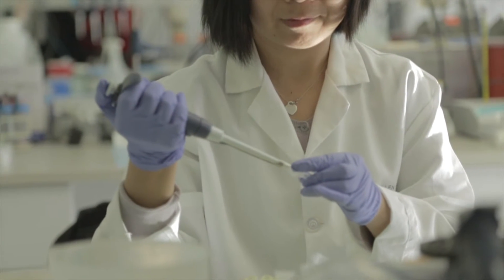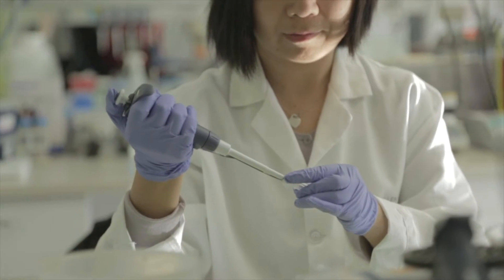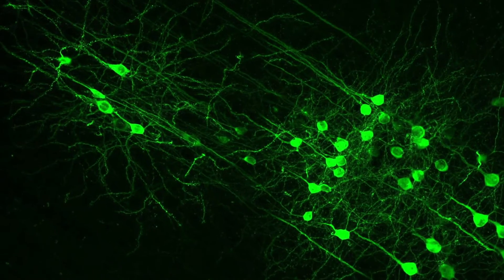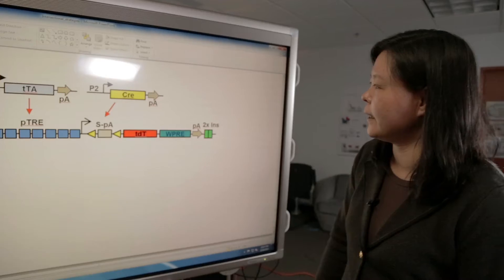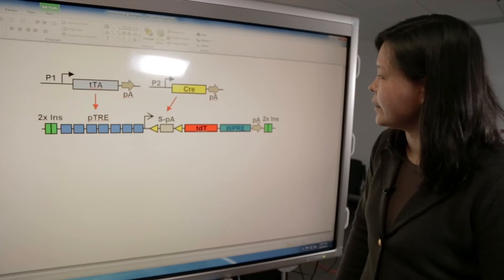The Cre recombinant system has been the most widely used technique in mammals to create this kind of cell type-specific control. However, many current Cre lines still have limitations, so a genetic intersectional strategy can be used.